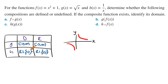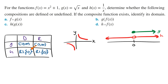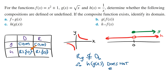Drawing a number line, we can see this clearly. The domain of h is all real numbers except for 0, and the range of g is from 0 to infinity. The range of g is not a subset of the domain of h because 0 is included in the range of g but it's not included in the domain of h. Therefore, the composite function h of g of x does not exist — it's not defined.